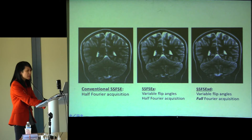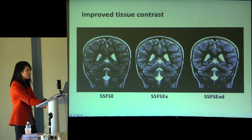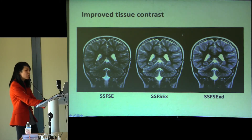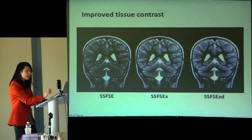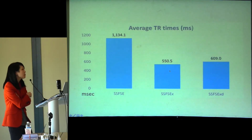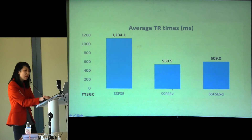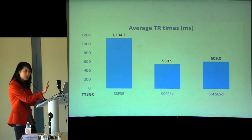One thing we're exploring is using variable refocusing flip angles for improved image quality and faster scan time. Here's some preliminary data: with conventional fast MR, images look flat. After applying variable flip angles, you start seeing gray-white differentiation better. Another example — with a change in refocusing flip angle, it starts to look like a real T2 image, the kind we use day-to-day at three to five minutes depending on magnet strength. These are much faster — half the time of even the current fast scan — at around 1100 milliseconds, and less sensitive to motion.